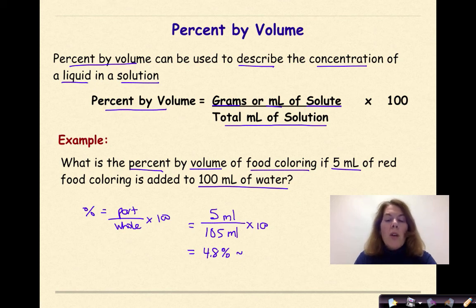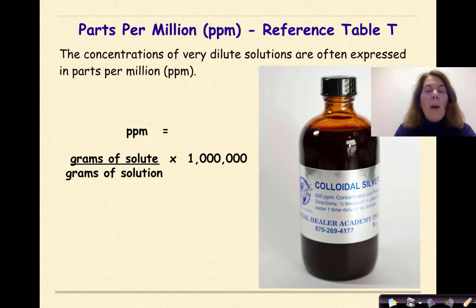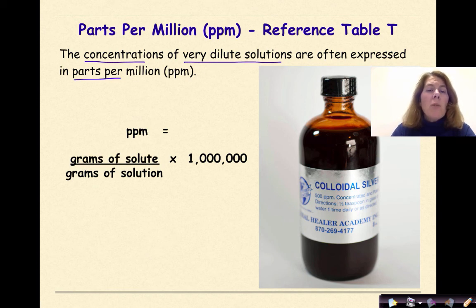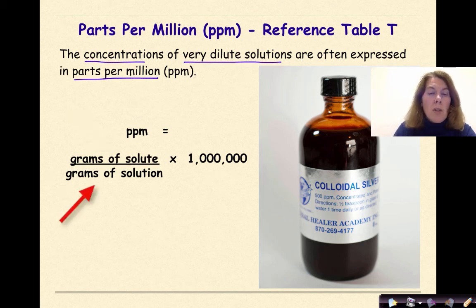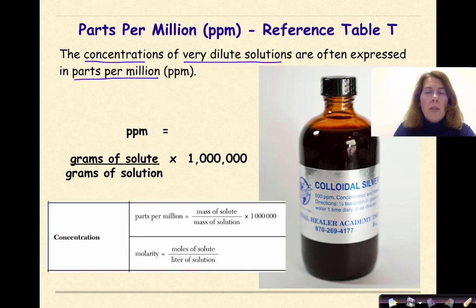Rounding to one significant figure, that's about 5% food coloring in 105 milliliters of solution. Now let's talk about parts per million, represented as PPM. This is also found on reference table T. Parts per million is used when you have concentrations of very dilute solutions, because percent by mass or percent by volume is not detailed enough. Parts per million is equal to grams of solute over grams of solution times 1 million — the only change from percent by mass is multiplying by a million instead of 100. If a problem is given in kilograms, make sure you convert to grams so your units are consistent.